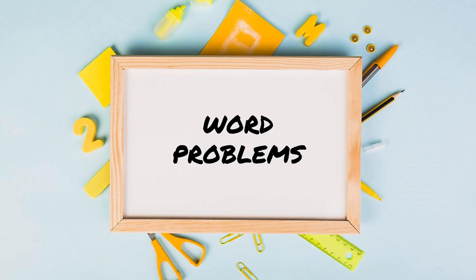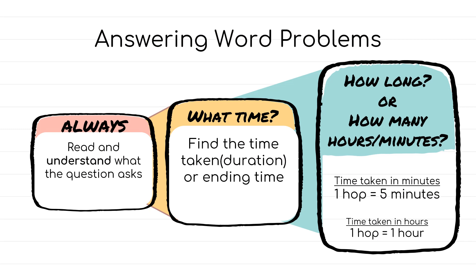As you learned before in Year 1 for answering word problems — the first step is to read the question and understand what the question asks. If the question asks you to find the time taken, you need to find the time taken from the starting time to the ending time. If the question asks for the ending time, you need to use the starting time and the duration to solve it.